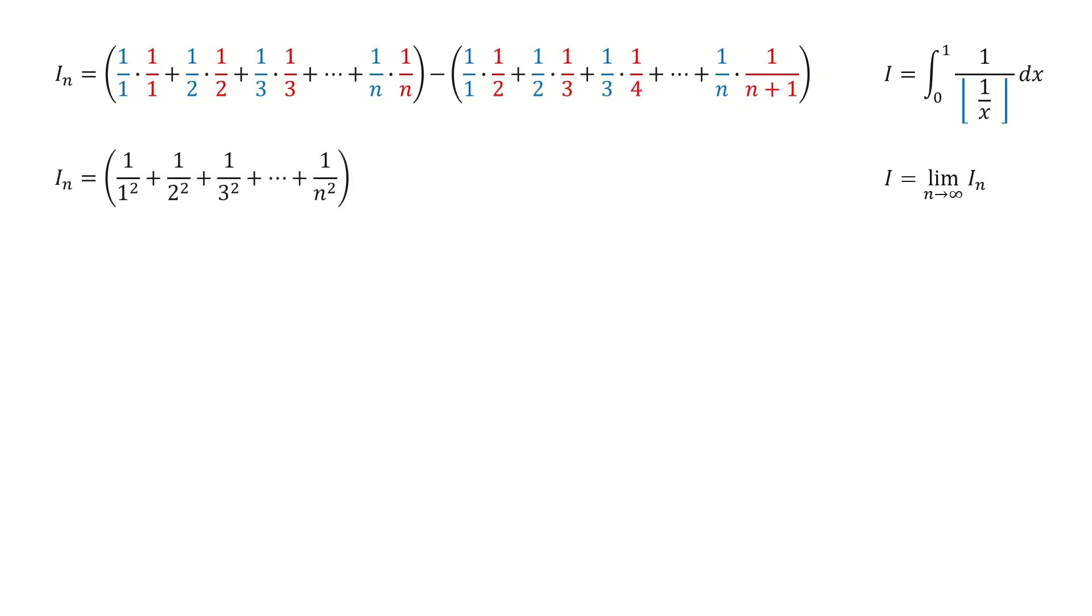And for the first group, we write it here. For the second group, this is a telescoping sum, so we can write it into this way. And here we write the product into the subtraction. And then all these terms cancel out. And I copy it here.